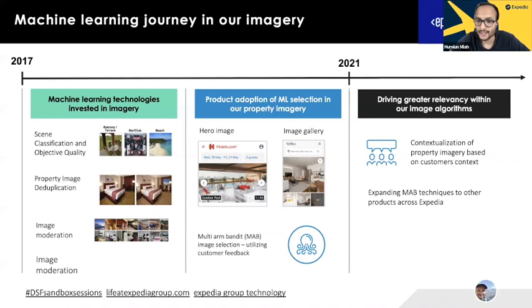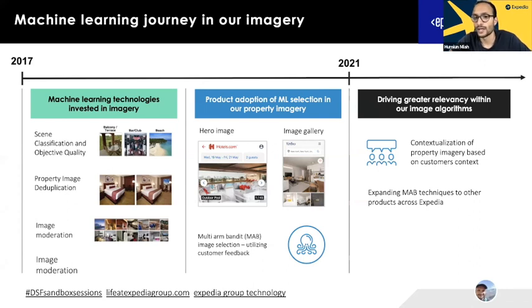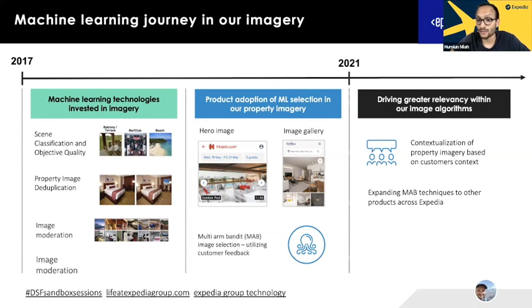Next steps from a product perspective: in 2021, the focus is on adding more relevancy factors — how can we show more appropriate imagery for different types of customers? Not all our customers are the same: we have business travelers, family travelers, couple travelers. How can we contextualize imagery for different customer types and different seasons? We're also now adopting this multi-armed bandit methodology across many different products at Expedia — from modules on the search results page and homepage, to testing different text variants across the site.